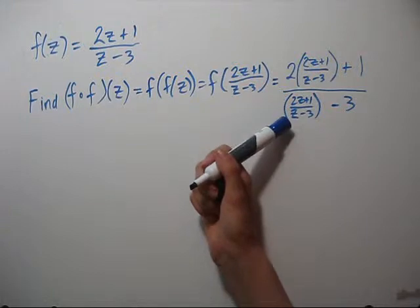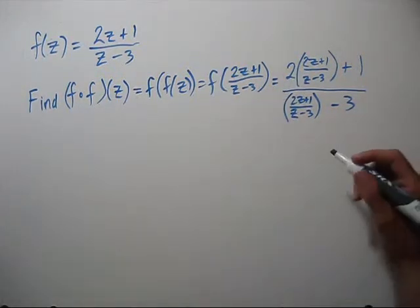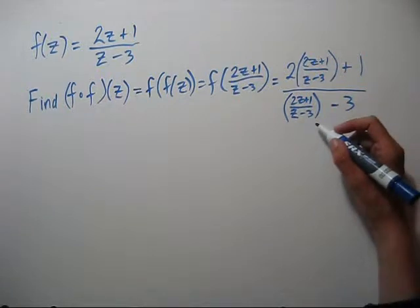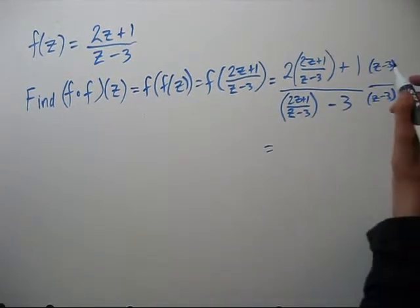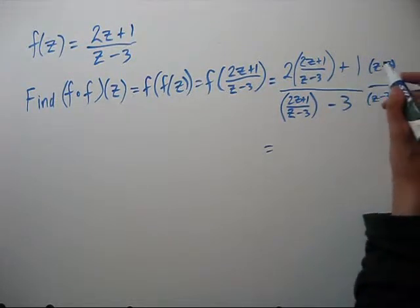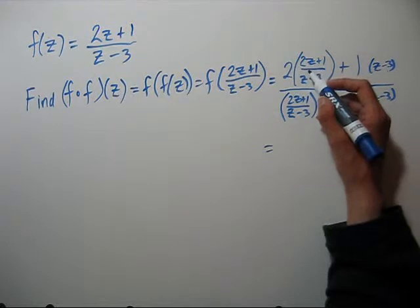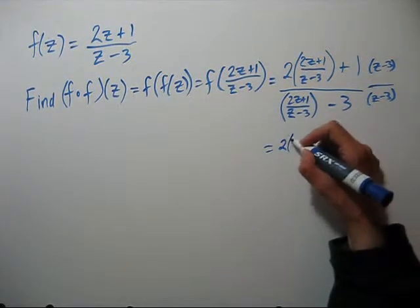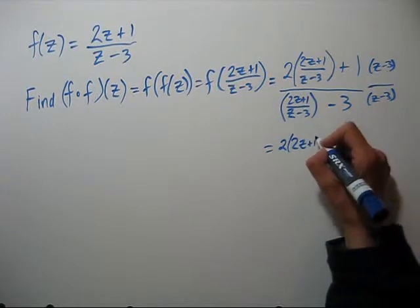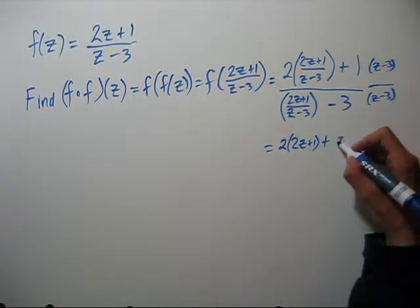Be really nice to get rid of the complex fraction, which means we have extra denominators in here. We can do that by multiplying our numerator and denominator by z minus 3. Now make sure we distribute through. When we multiply z minus 3 times this term, the z minus 3's cancel, and we're left with 2 times 2z plus 1. And then we also have the 1 times the z minus 3.